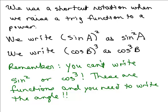This is a shortcut notation so that you don't have to put the parentheses. And you're not squaring the sine, it's the sine of A that is being squared. So you cannot write sine of A squared because that means A is being squared and then you're taking the sine. That's completely different, it is not the same thing. So it means you're taking the sine of A and then squaring it.